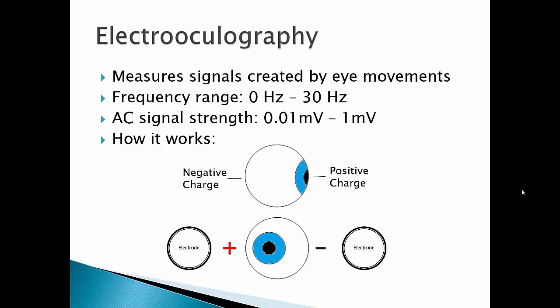When your eye moves to the left, it creates a slightly positive on the left and negative on the right. It has a frequency range of 0 to 30 Hz. Most of the useful frequencies are below 10 Hz. The AC signal strength is 0.1 mV to 1 mV.